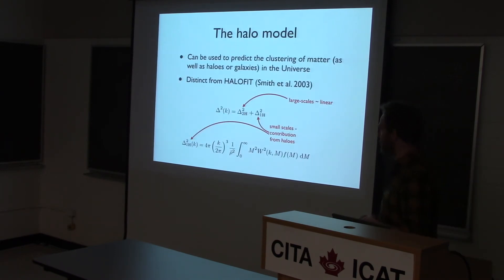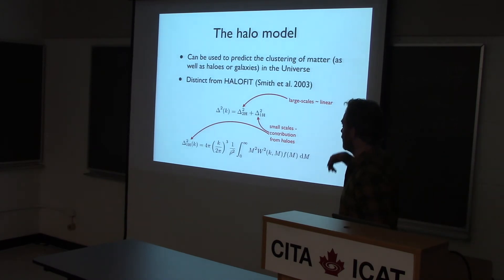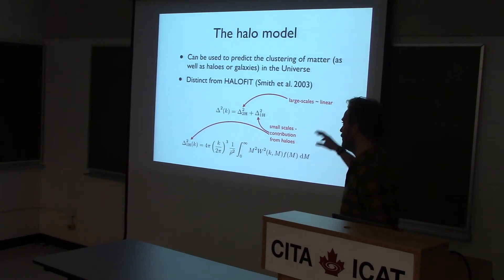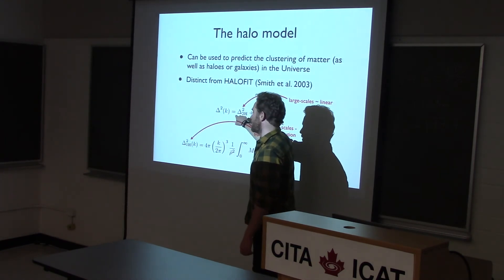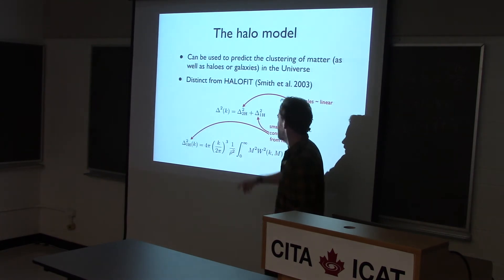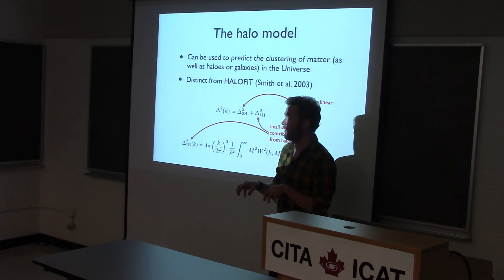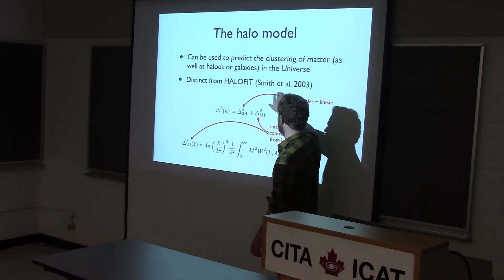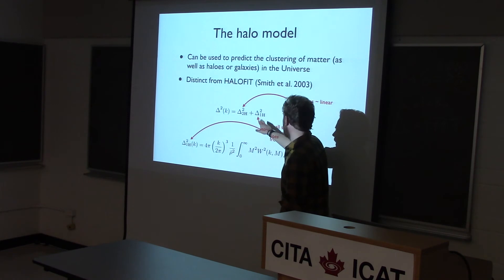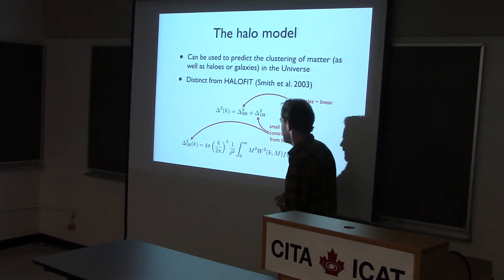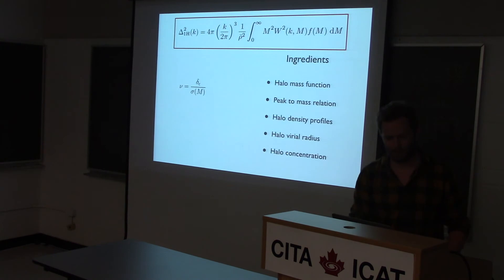The way I'm going to suggest to understand these differences is by looking at the halo model. This is an analytical model that uses the properties of halos and gives a guess at what the power spectrum should look like. You break the nonlinear power into a two-halo term — accounting for clustering between halos, essentially the large-scale linear term — and a one-halo term that accounts for the clustering arising from within halos. So the two-halo term should be the same for all cosmologies, while the small-scale behavior is given by halo properties.